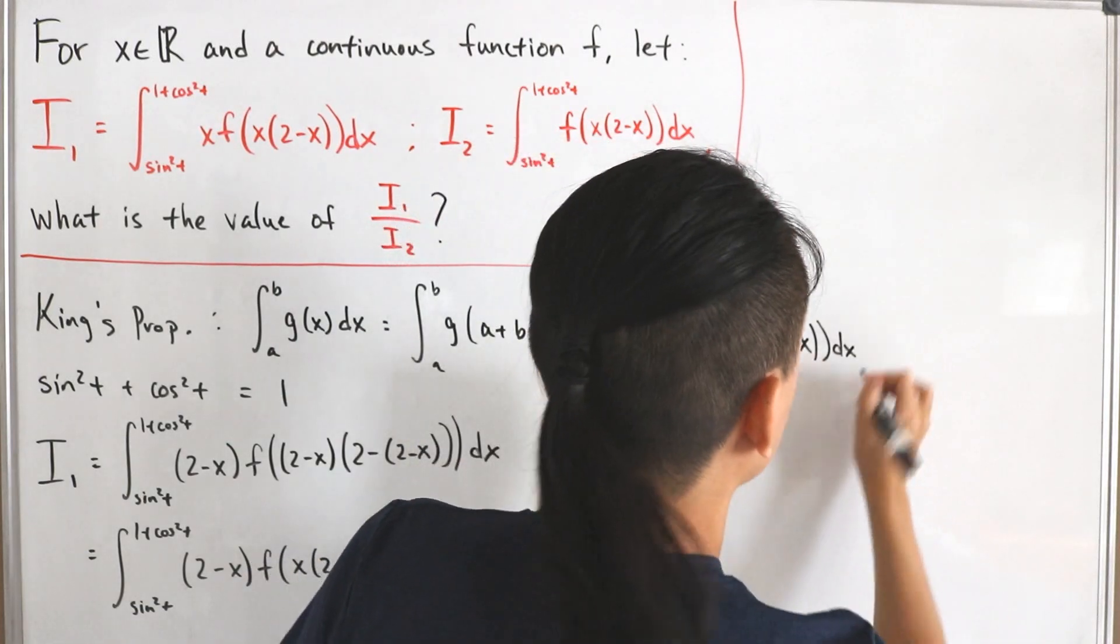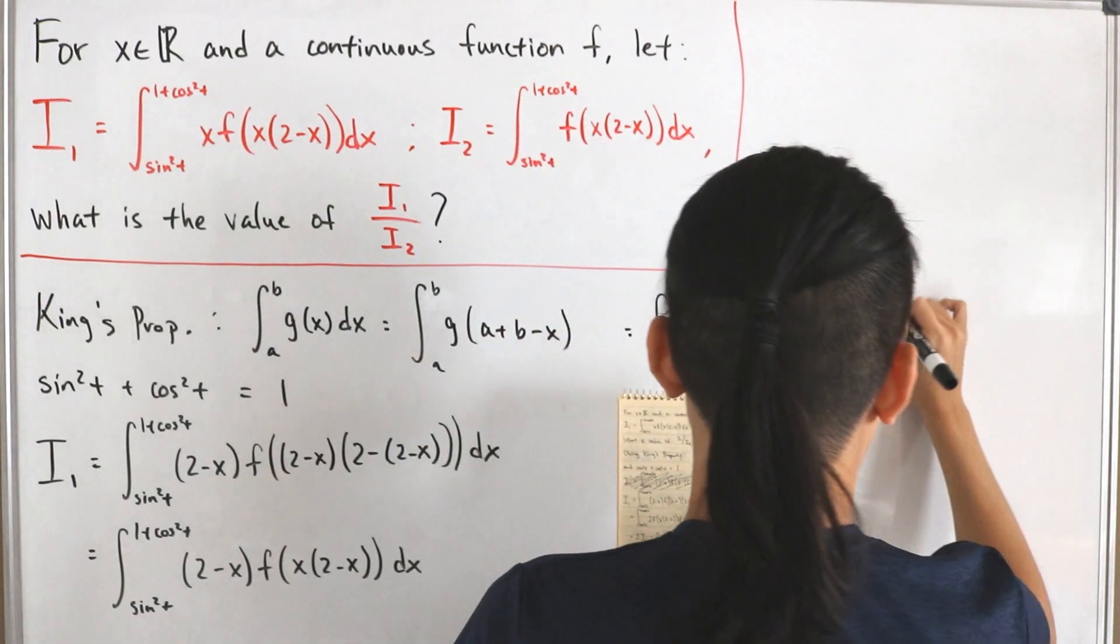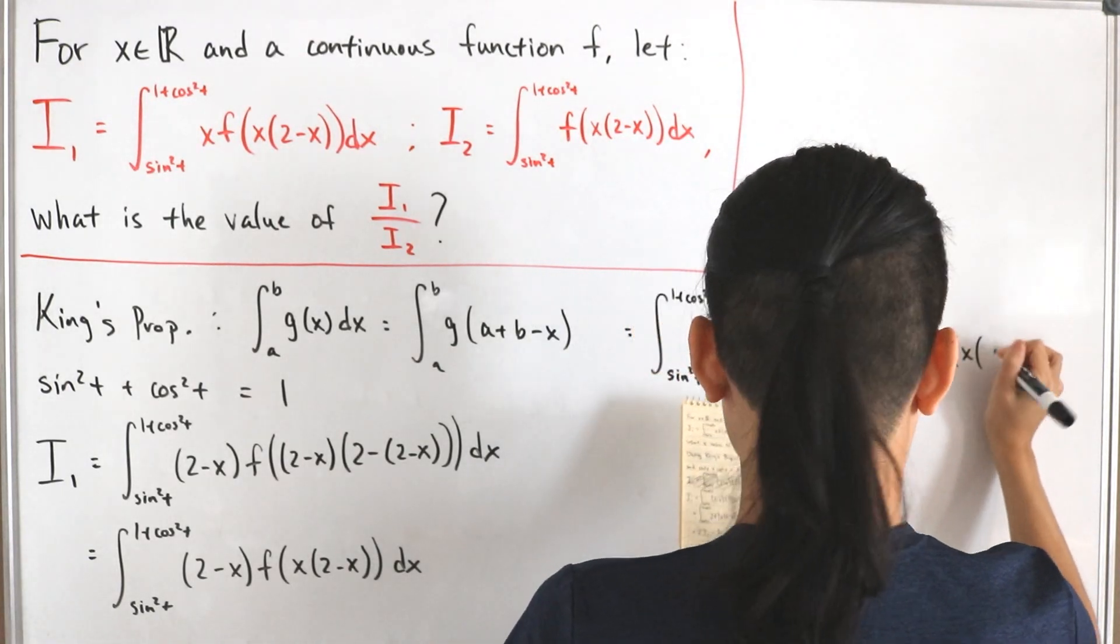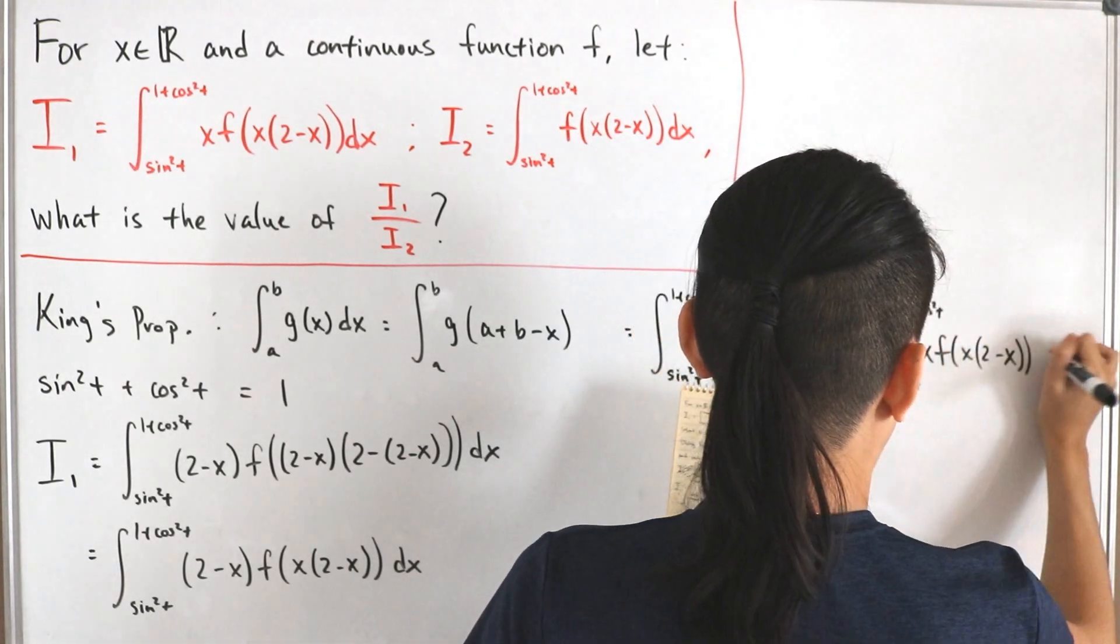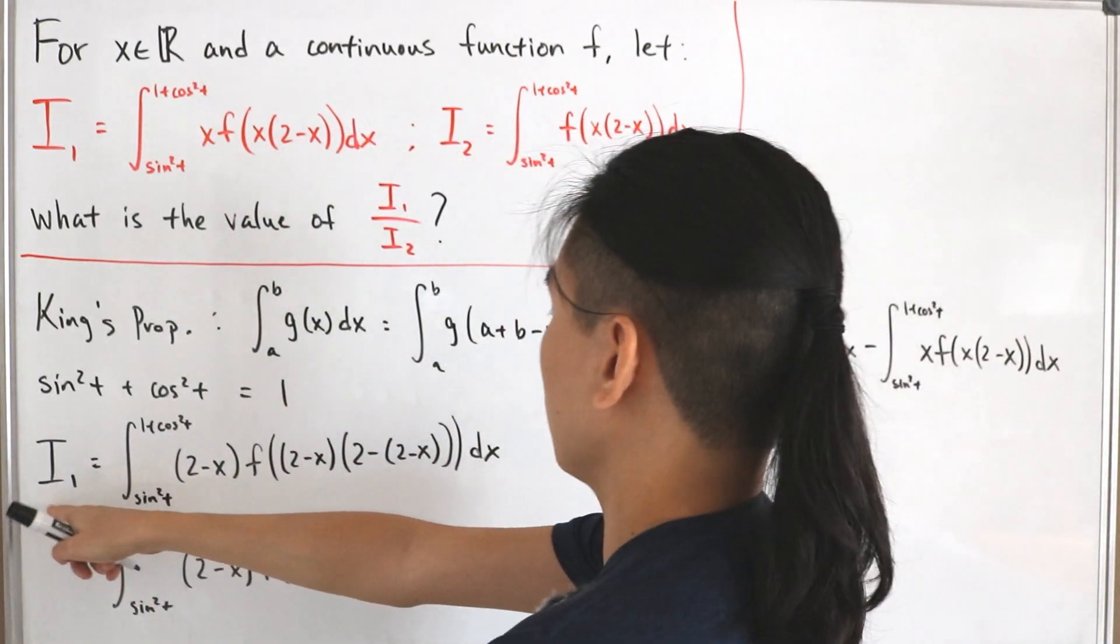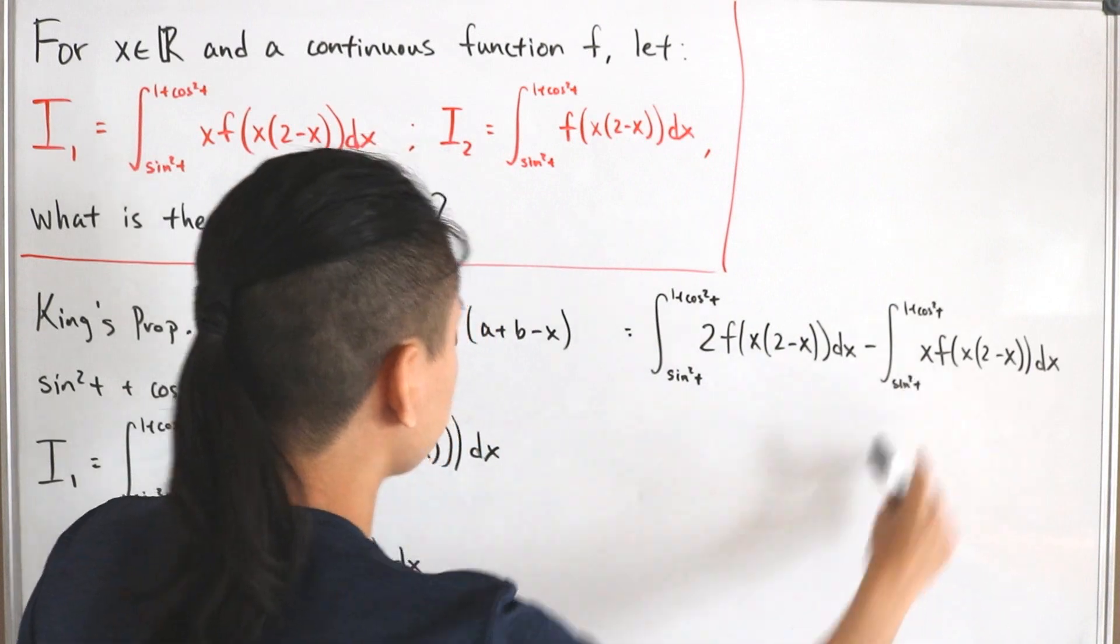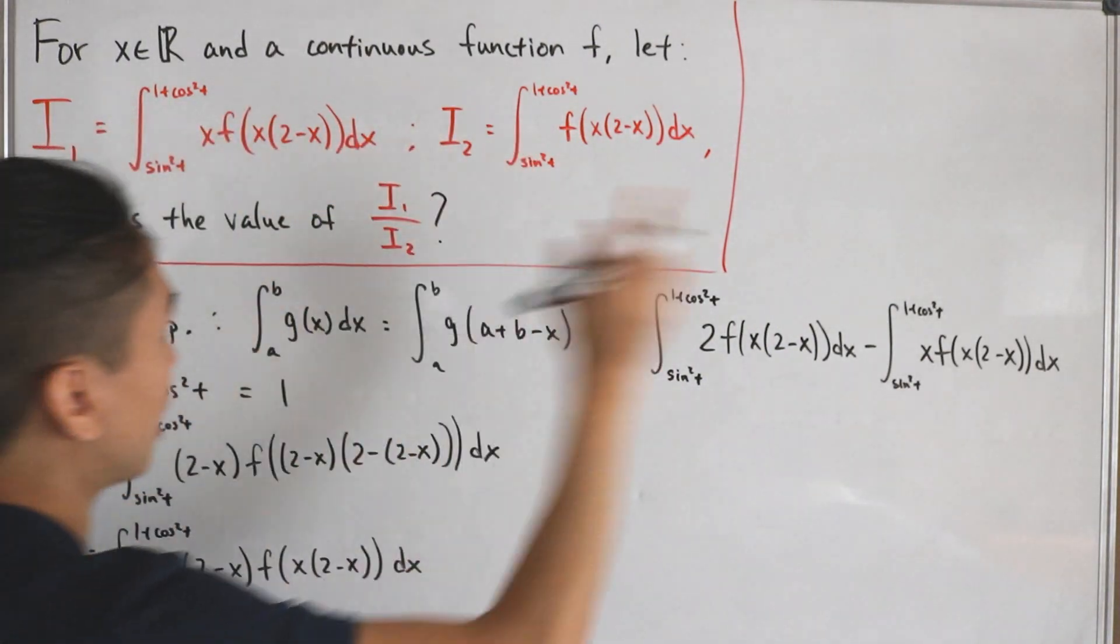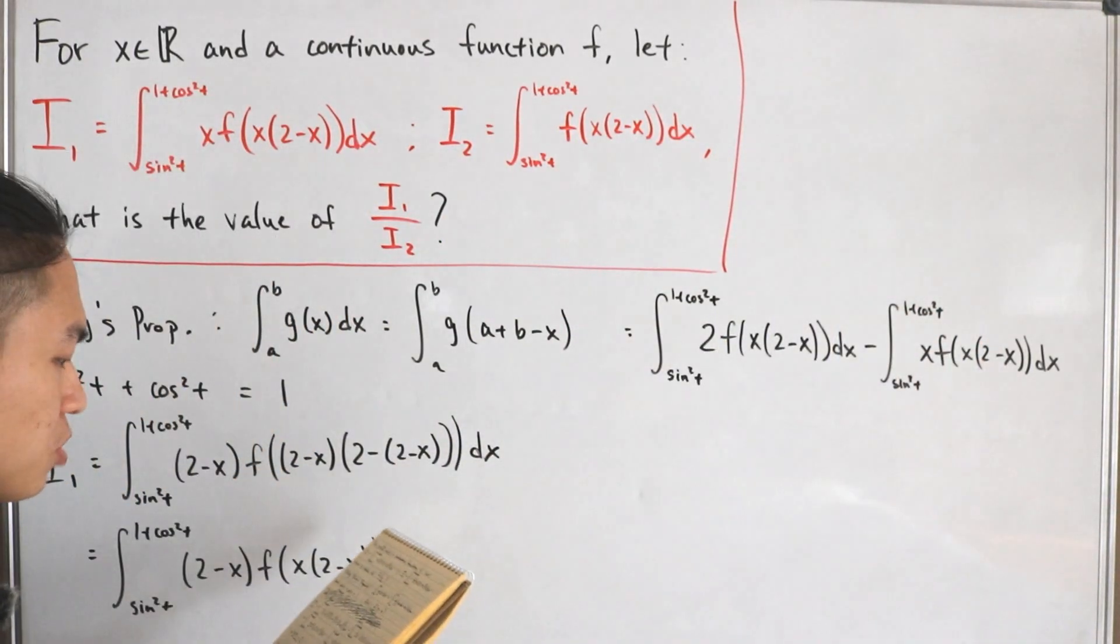And then subtract with the same bounds of x times f of x times two minus x, finish it off with dx. And as you can see, so far that's our i sub one on this left side, and what's cool is that what's given over here, we have i sub one and i sub two, what actually matches that we can actually put in that substitution.